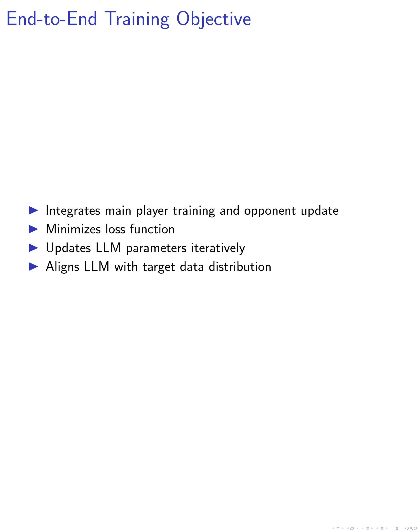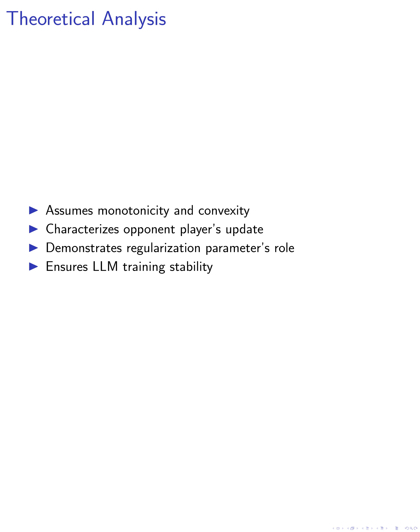The LLM parameters are updated iteratively using the end-to-end training objective, aligning the LLM's distribution with the target data distribution through the iterative self-play process. Finally, we provide a theoretical analysis under assumptions of monotonicity and convexity of the loss function. We show that the optimization process of SPIN naturally stops when the LLM's distribution aligns with the target data distribution. We also demonstrate that increasing the regularization parameter enhances the stability of LLM training and convergence to the target data distribution.